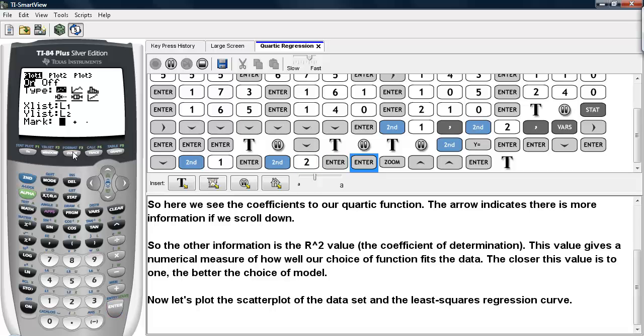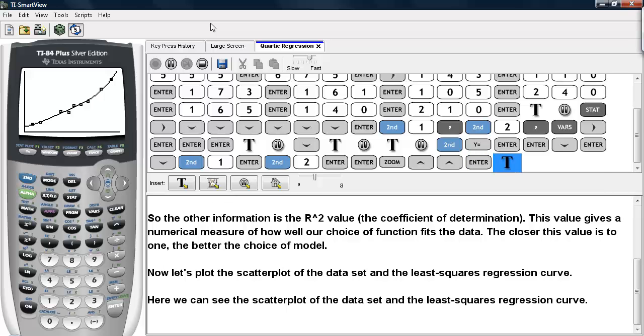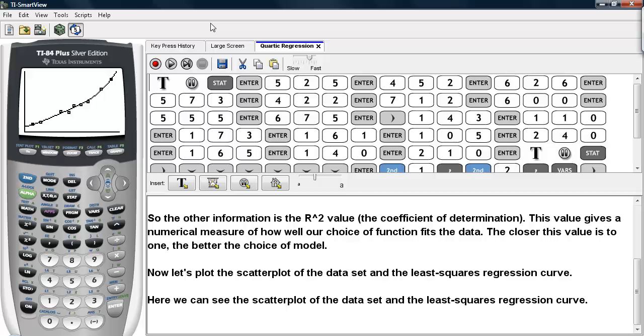And then after that we'll hit zoom. And then we will select zoom stat to size up our window. And here we can see the data values represented as boxes. And the curve graphed here with these pixels. And this is how you can perform a quartic regression or fitting a fourth-degree polynomial to a data set on the TI-83/84 calculators.